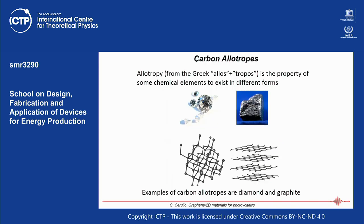So what is graphene? If you consider allotropes of carbon — the word allotropy comes from the Greek 'allos' and 'tropos' — it refers to different forms of a chemical element. Carbon can exist in different allotropes, and here are two examples: diamond and graphite.